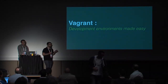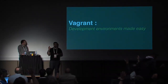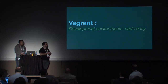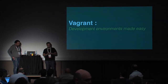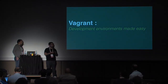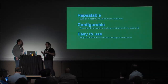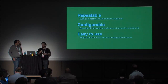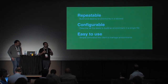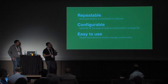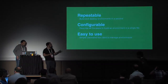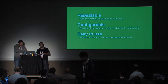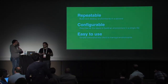Who here already uses Vagrant? Okay, almost everyone. Vagrant is a tool to create and destroy development environments and to automate the creation of your environment. It's repeatable — you can build and destroy environments in seconds. It's configurable — you have only one file to configure all your development environments, which is a Vagrantfile that we'll show later. And it's easy to use; it's a simple CLI to manage your development environments.